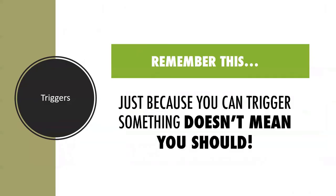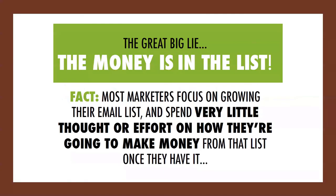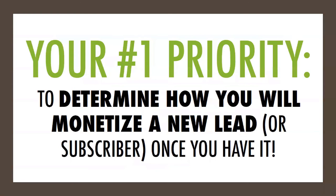Let's talk about triggers. Just because you can trigger something doesn't mean you should. Since we're talking about email, we need to start with list building, right? Wrong. We don't start with list building. This is the great big lie: the money is in the list. Most marketers focus on growing their email list and spend very little thought or effort on how they're going to make money from that list once they have it. If you were going to write one thing down, this would be it: your number one and only priority is to determine how you will monetize a new lead or subscriber once you have it.